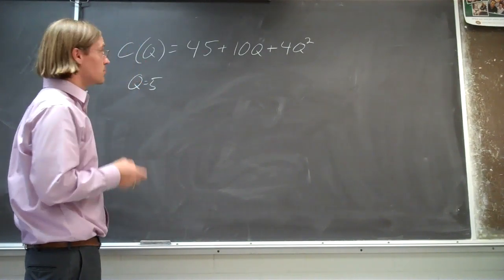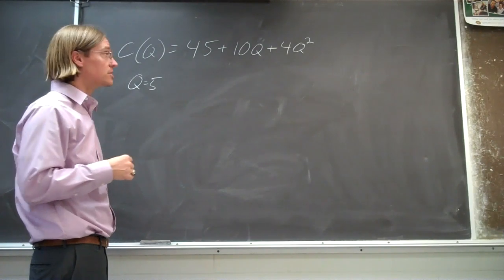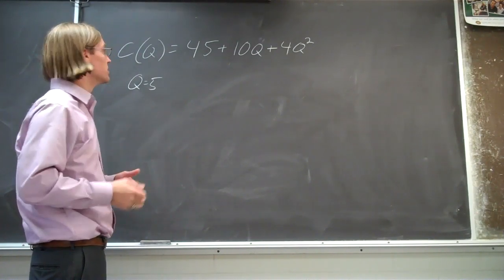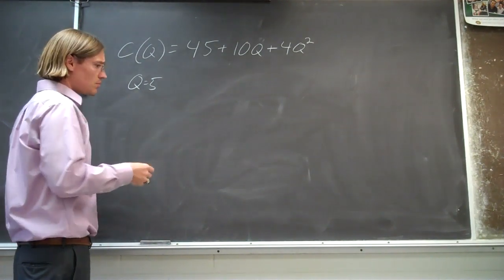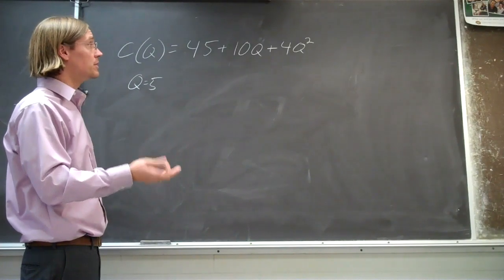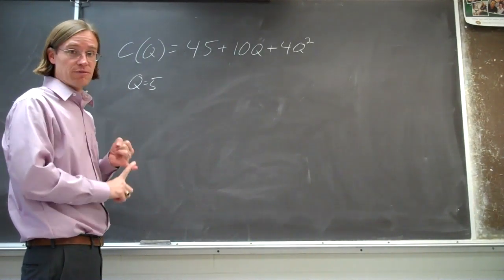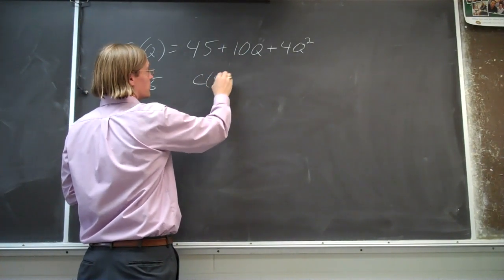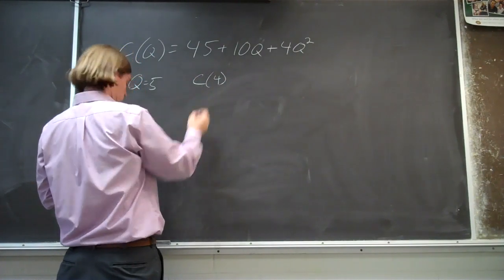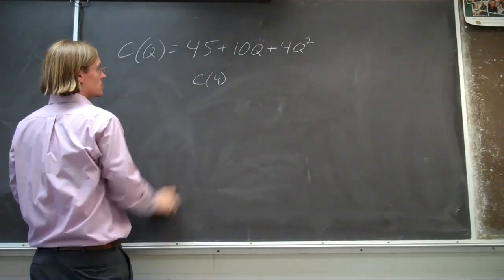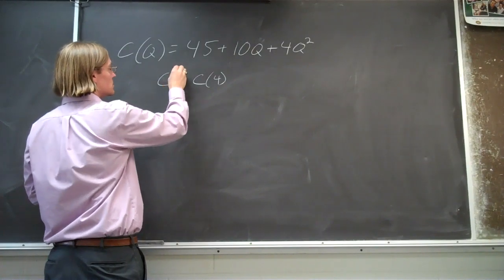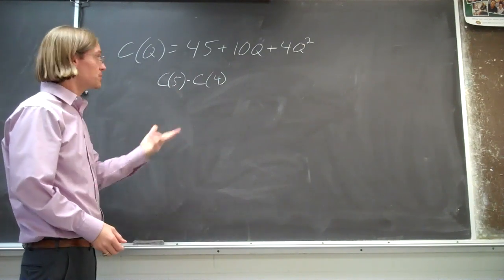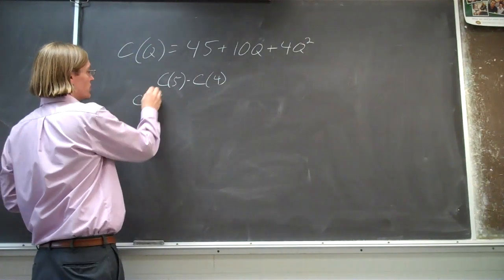We're looking for the change in cost — the additional cost when going from producing the fourth unit to the fifth unit. To get that additional cost of producing the fifth unit, we've got to calculate the total cost of producing four units and subtract that from the total cost of producing five units. That should give us the additional cost to produce that fifth unit.